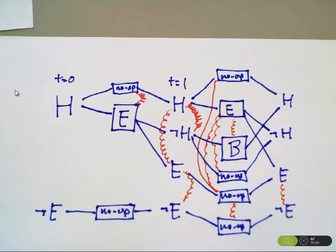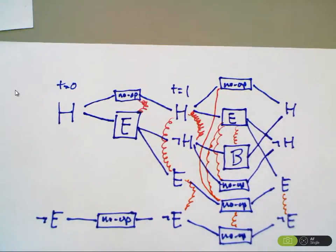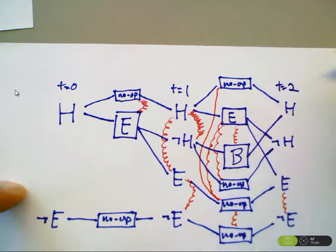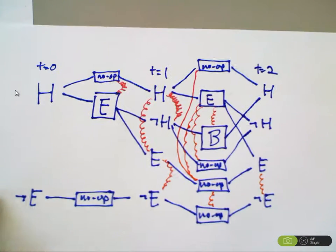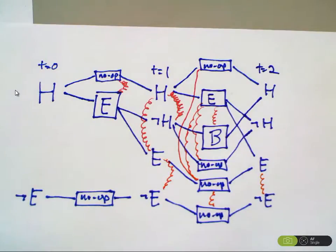Both goal literals are now true without being mutually exclusive. The number of mutual exclusion relations at the following level is smaller. We can make 'having' and 'have-eaten' both true at time step two — T equals two.